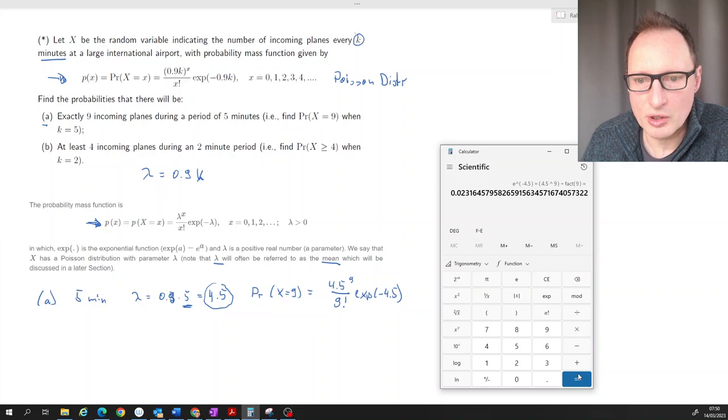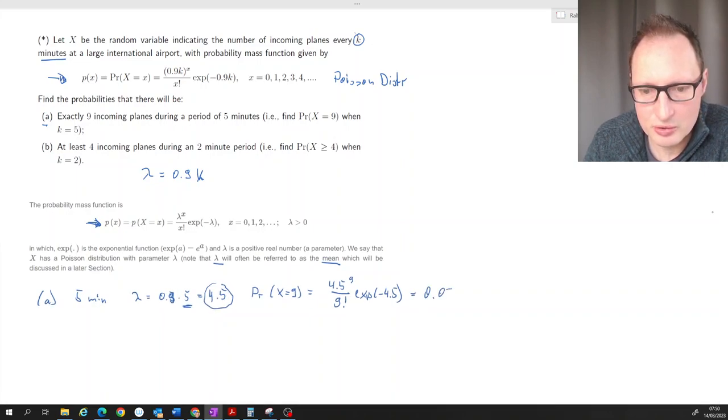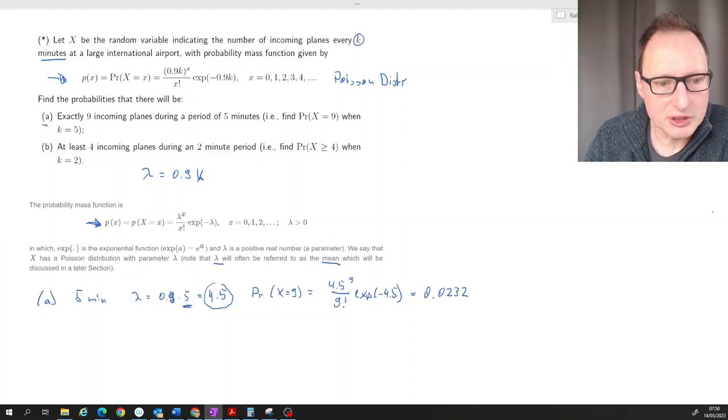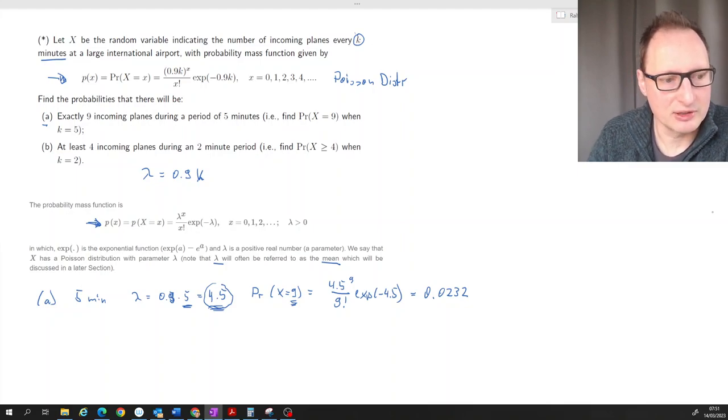And what we get is 0.0232. So that is 0.0232. So on average we should expect 4.5 planes. The probability that there will be 9 planes in 5 minutes is very very small, around 2 percent if we follow that distribution.